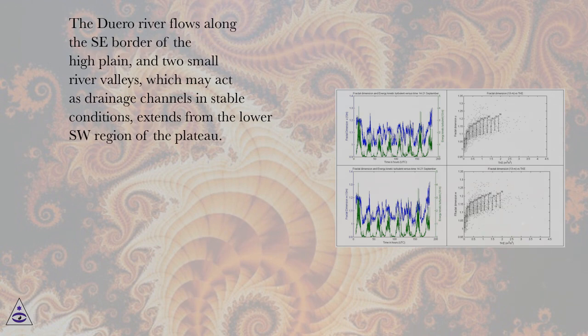The Duero River flows along the SE border of the high plain, and two small river valleys, which may act as drainage channels in stable conditions, extend from the lower SW region of the plateau.